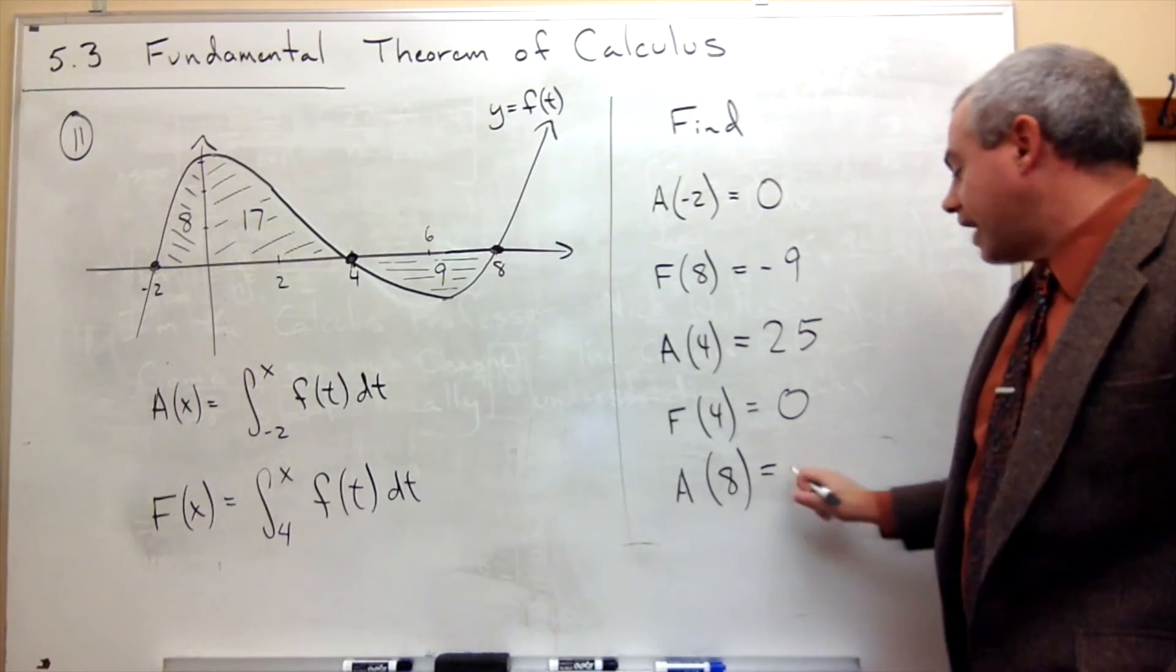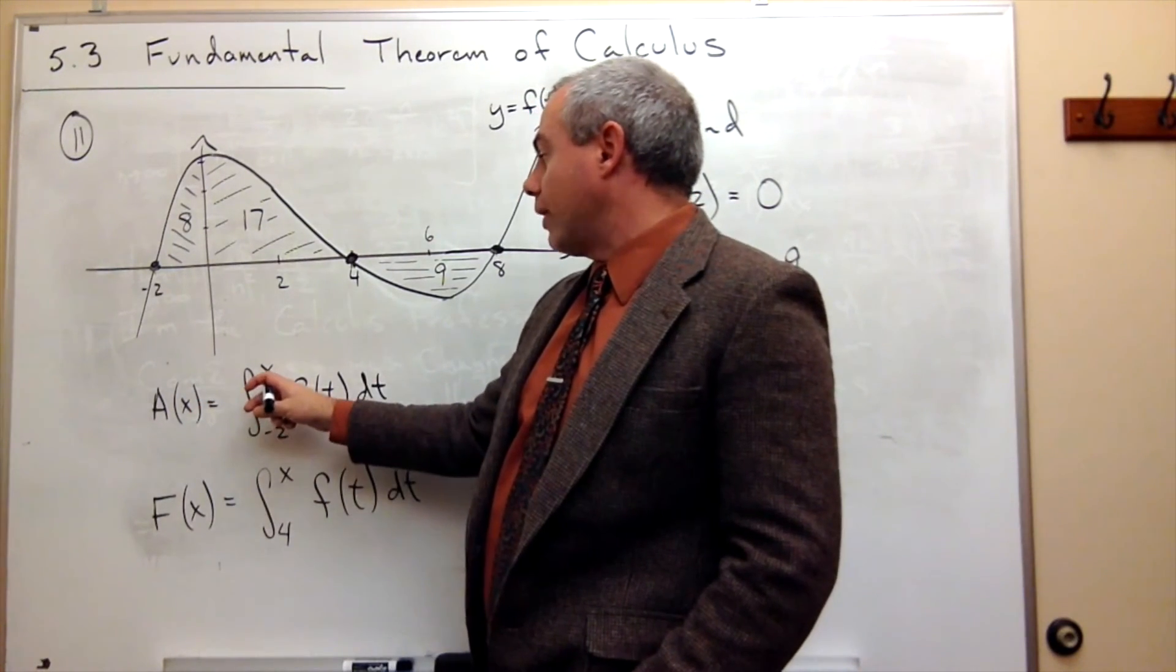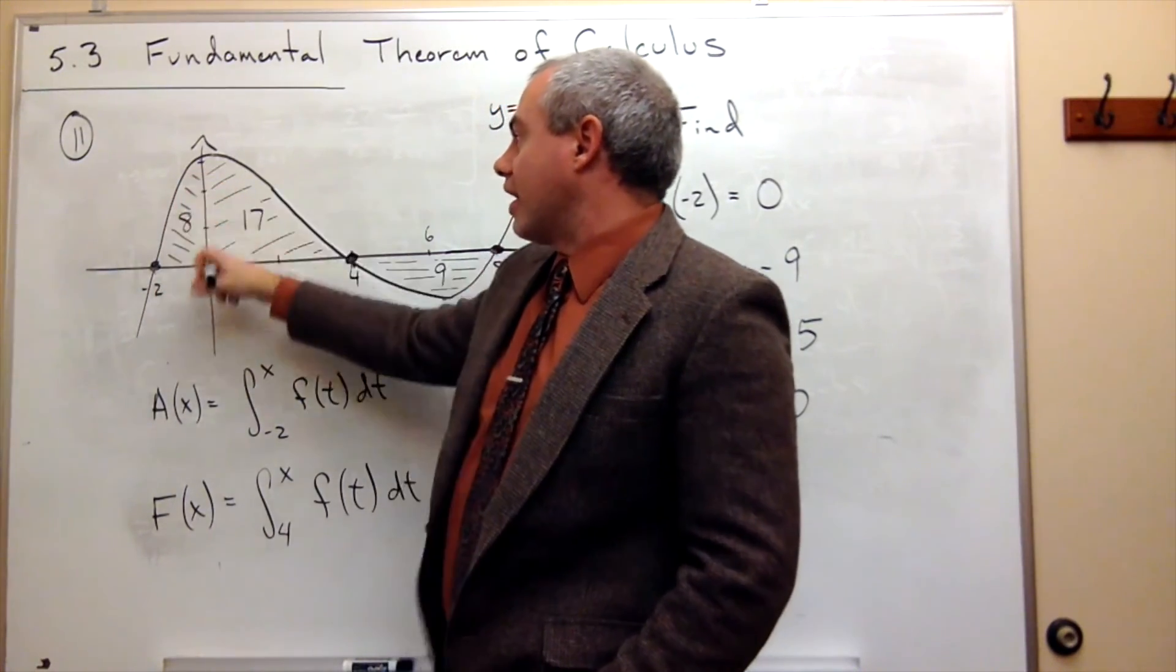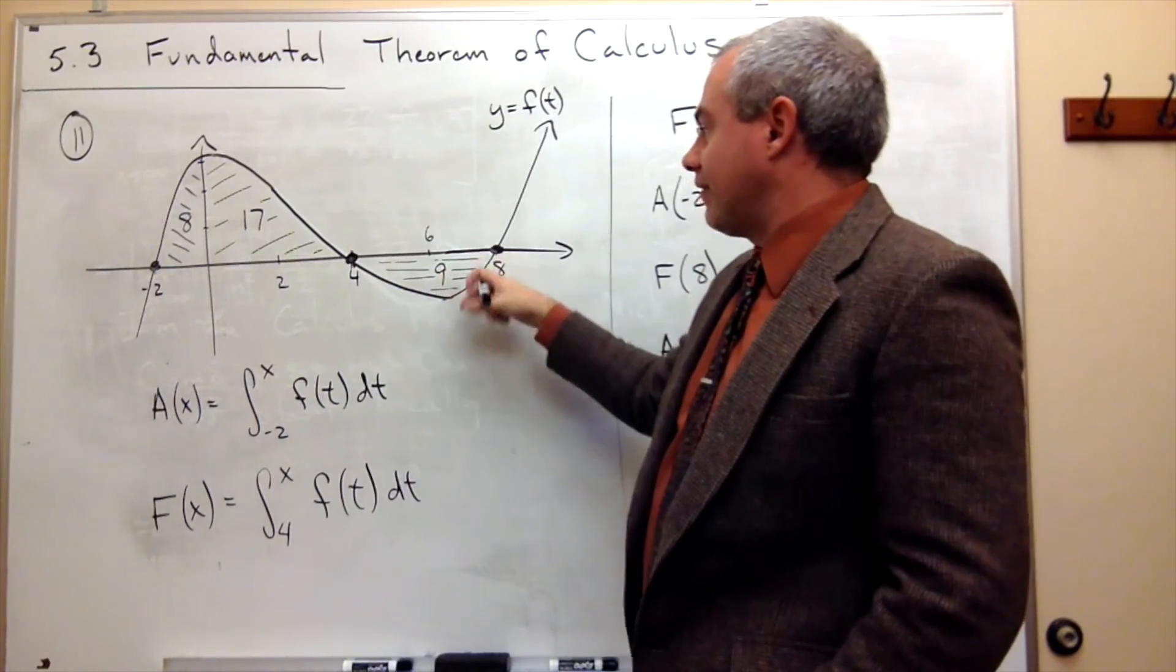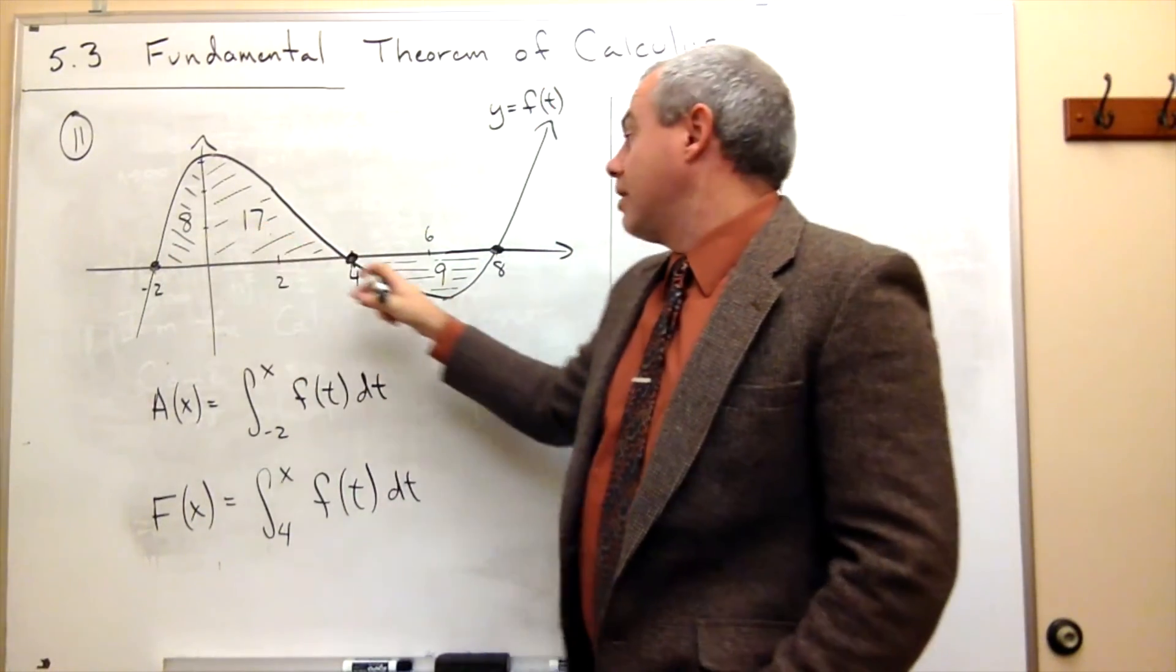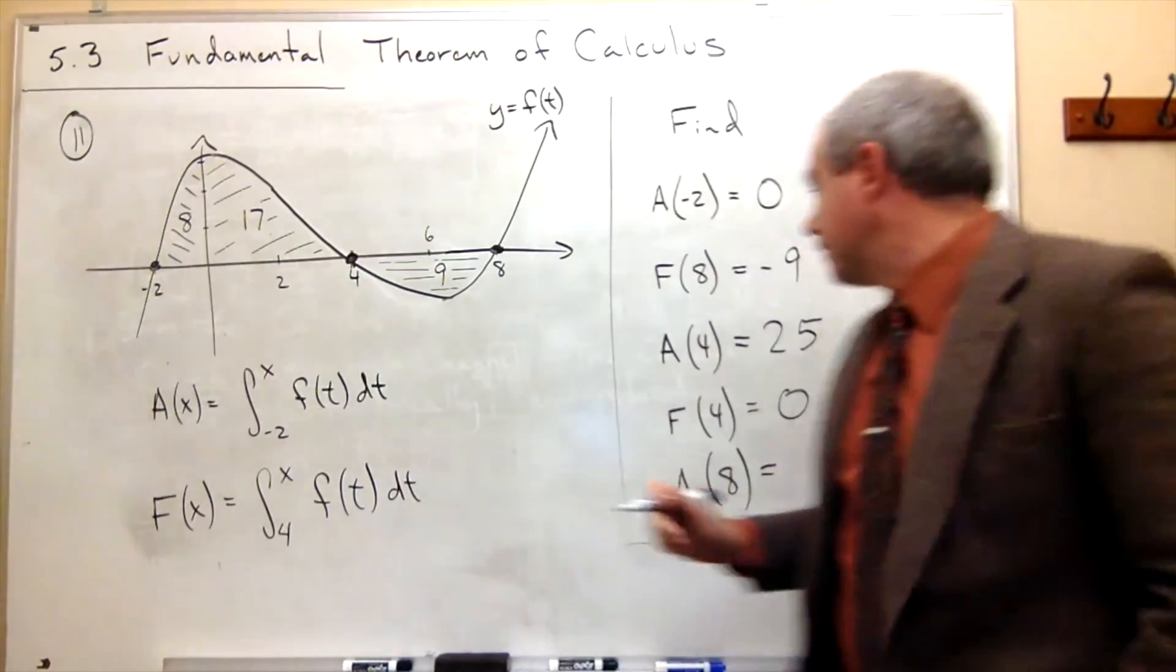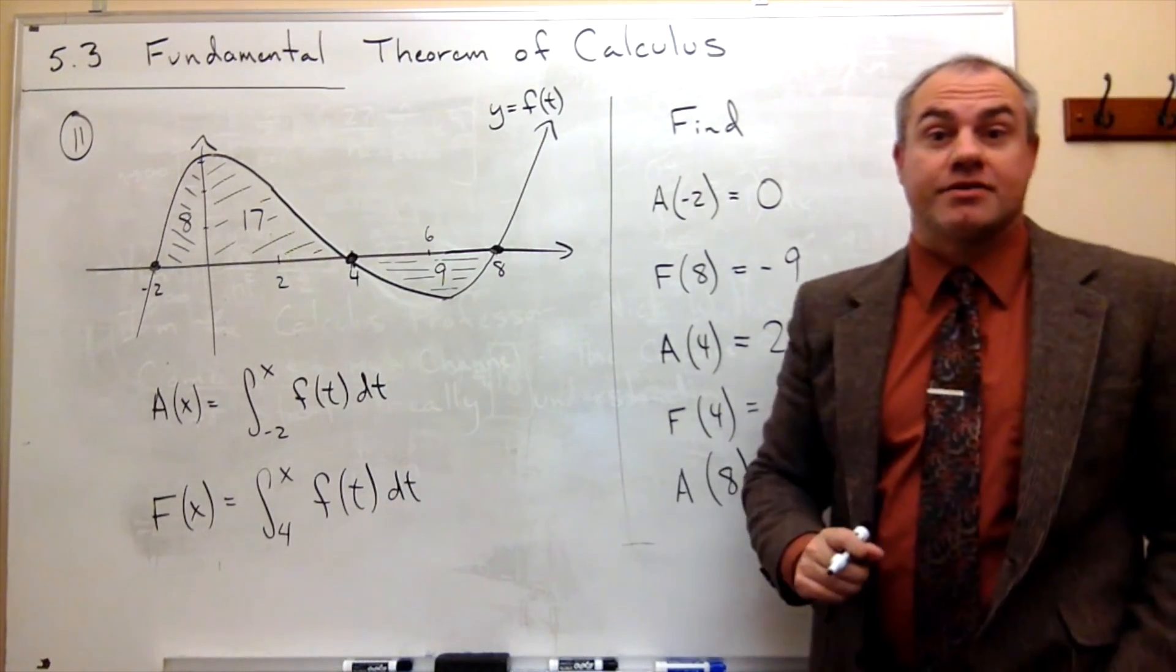And finally, A of 8, if I go back to A, if I integrate from negative 2 all the way to 8, then I start at negative 2, I start picking up area, picking up area, picking up area, and then I pick up this negative area, 9. So I have 25 positive area minus 9 negative area would give me positive 16 area. And that's my answer.